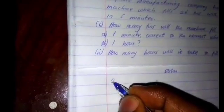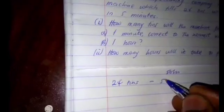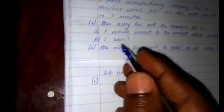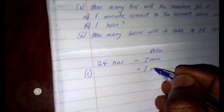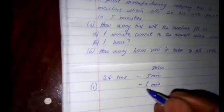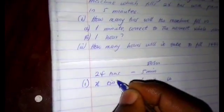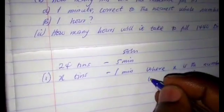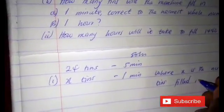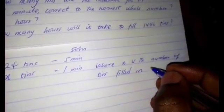The machine fills 24 tins within five minutes. For part i, how many tins would it fill within one minute? Let us represent x as the unknown, the number of tins filled within one minute, so x tins when x is the number of tins filled in one minute.